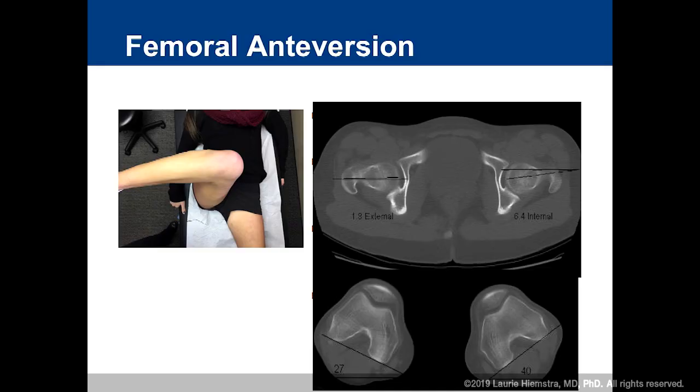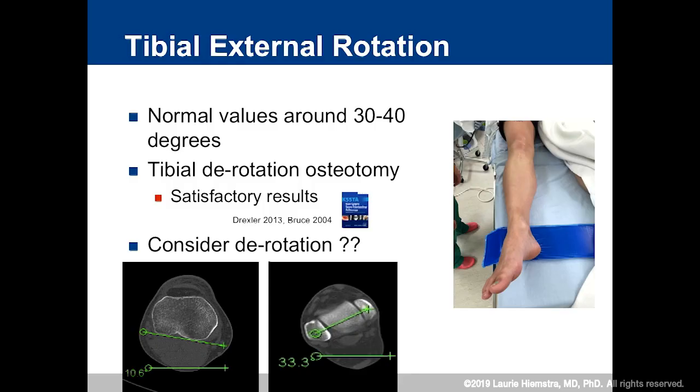For femoral anteversion, the guidelines are fairly mobile. I do a physical exam. My criteria is if they have greater than seven degrees of hip internal rotation, plus 30 degrees more of internal rotation than external rotation, that's concerning for a rotational problem, and I'll get a rotational profile. There have been studies out of Austria showing that the patella dislocates easier in people who have femoral anteversion. I consider derotation osteotomy if femoral anteversion is greater than 25 degrees. Same thing with tibial external rotation — I screen with the foot-thigh angle on physical exam, and if I see a problem I look at the rotational profile.